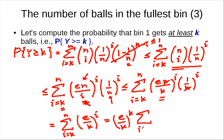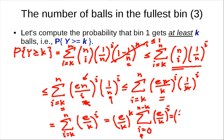We factor out (e/k)^k, and the remaining sum is the geometric series with ratio e/k. If k is larger than e, say larger than 2e or some non-constant large value, then this is a geometric series with ratio less than 1/2, so the sum is at most 2. As k gets large, the sum gets closer and closer to 1, so we say it's approximately (e/k)^k.